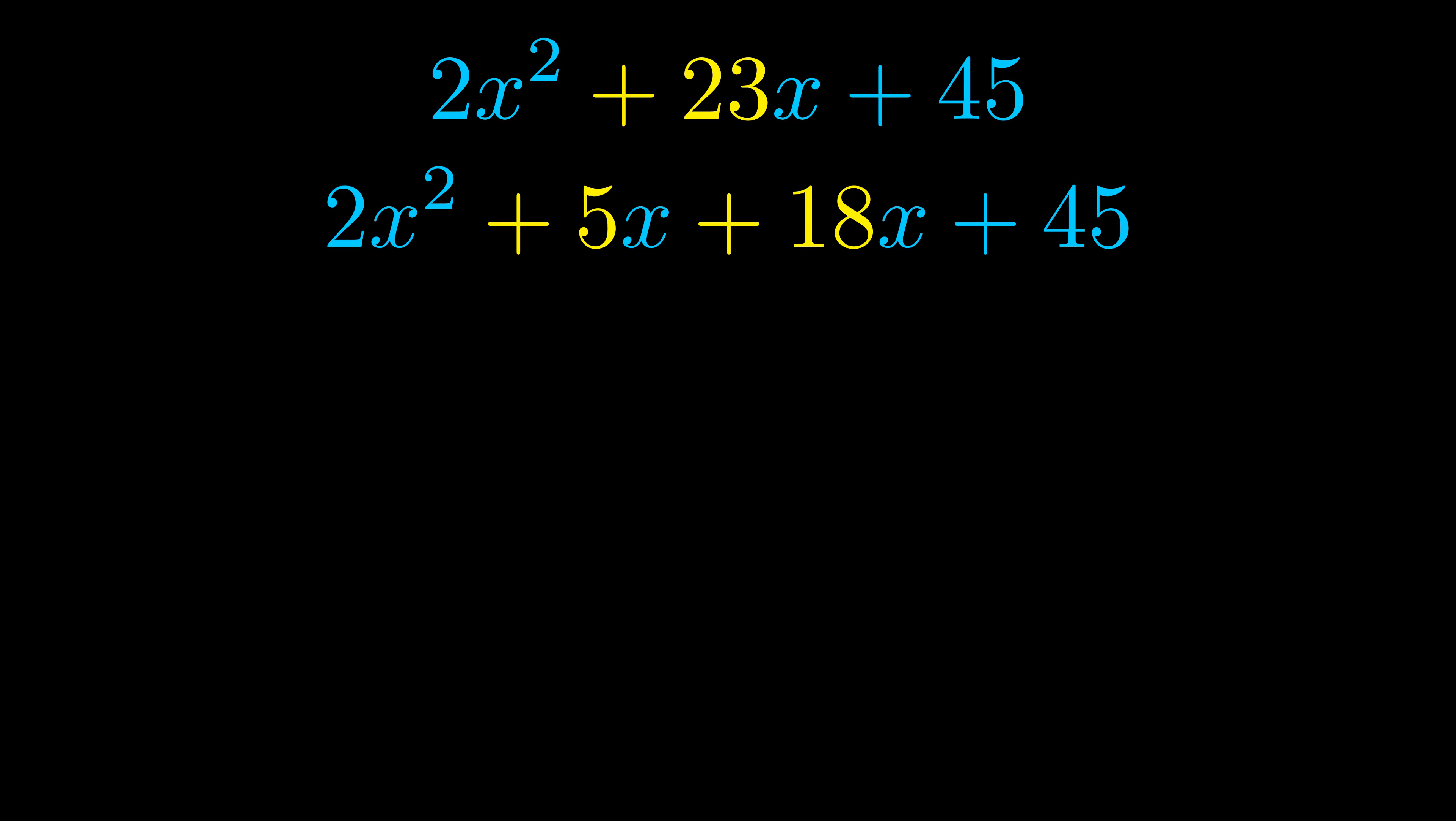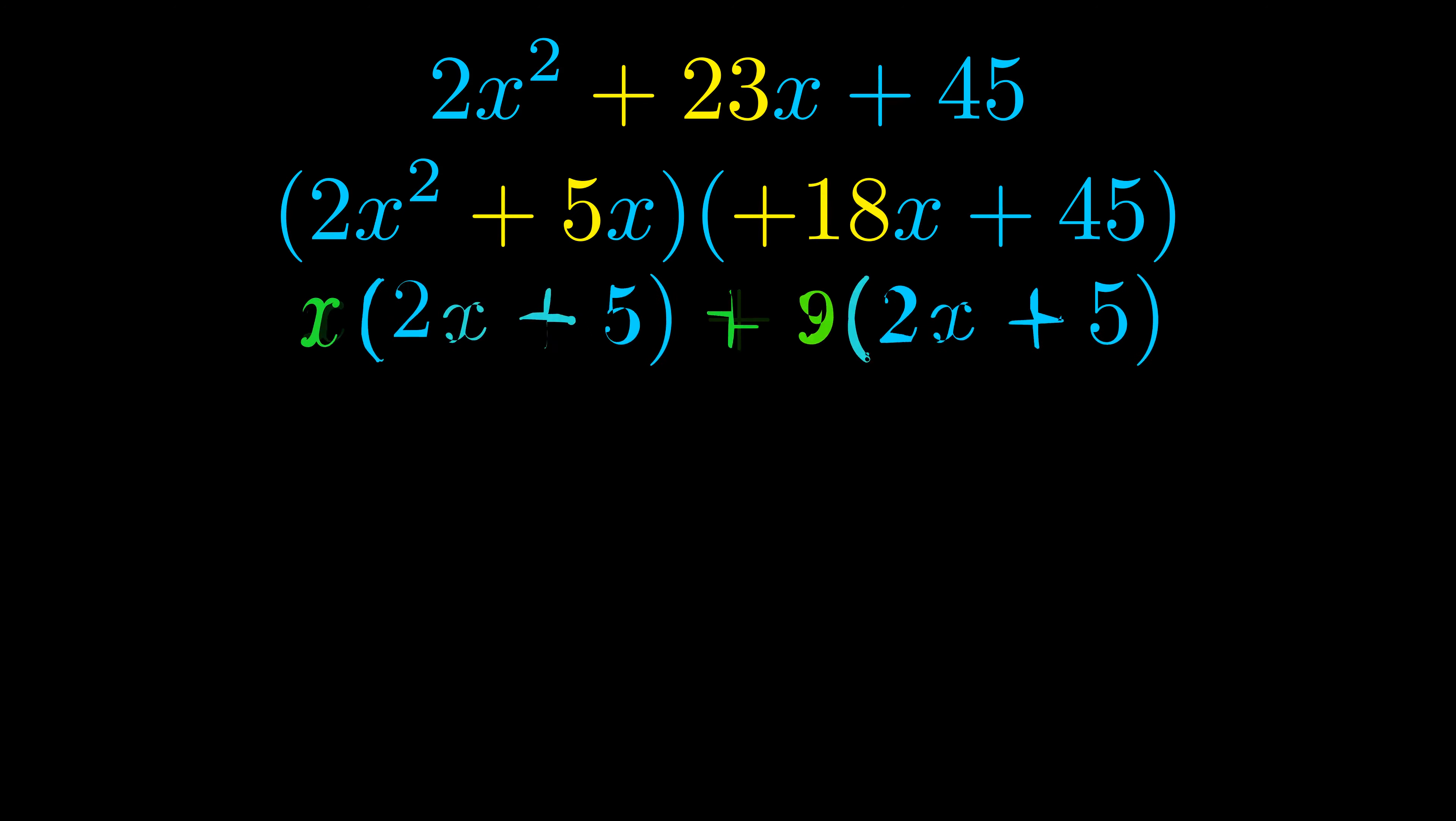Once we've done this, we put parentheses around the first term and the last term. We do that so we can take the greatest common factor out of both terms. We can see the greatest common factor is now outside in green.